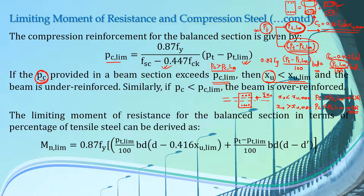This concept is just the opposite of a singly reinforced beam. In singly reinforced beams, when the percentage of tensile reinforcement was less than the value of the limiting tensile reinforcement, we had an under reinforced section. But in this case, if the percentage of compression reinforcement is less than the limiting value of compression reinforcement, we will have an over reinforced beam — the case is just the opposite. Finally, the limiting moment of resistance for the balanced section can be expressed in terms of the limiting value of tensile reinforcement PT limiting, and you can use this formula to calculate the value of limiting moment of resistance.